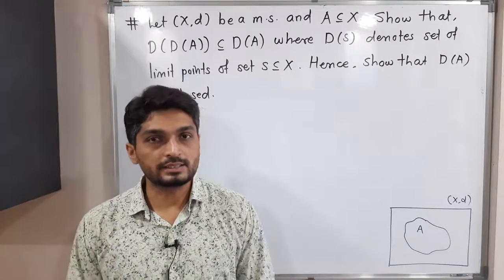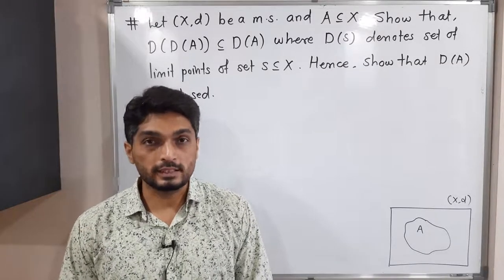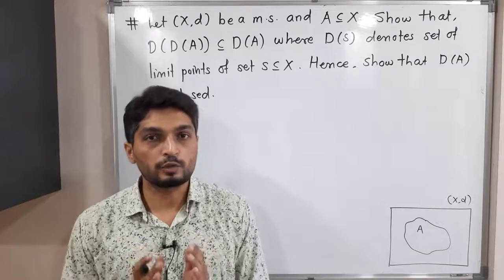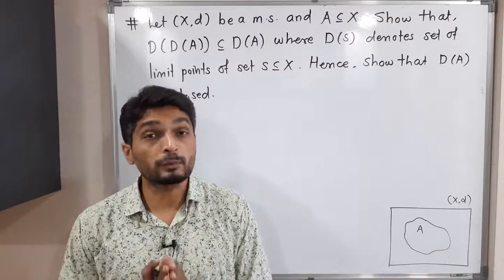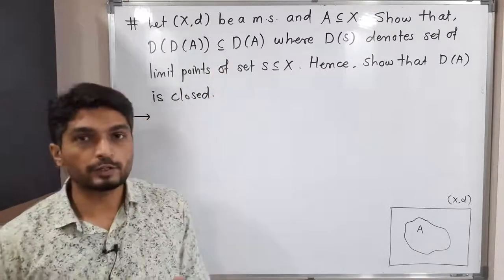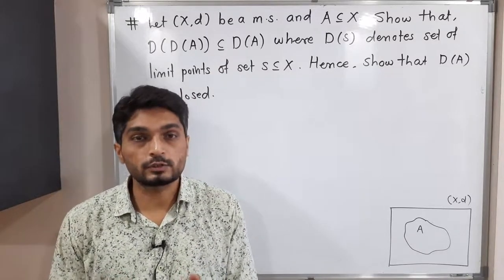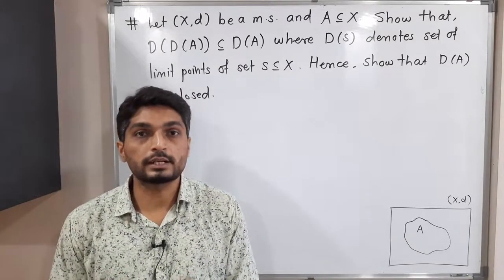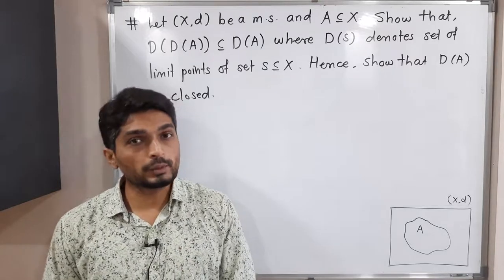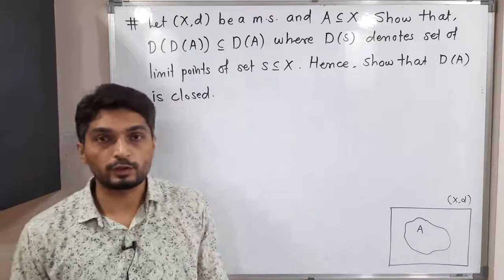Hi everyone, let us discuss this result. In this result, we have a metric space (X, d). A is a subset of X and we have to prove that D(D(A)) is a subset of D(A). D(A) means the derived set, that is, the set of all limit points of A. So we have to prove that D(D(A)) is a subset of D(A).